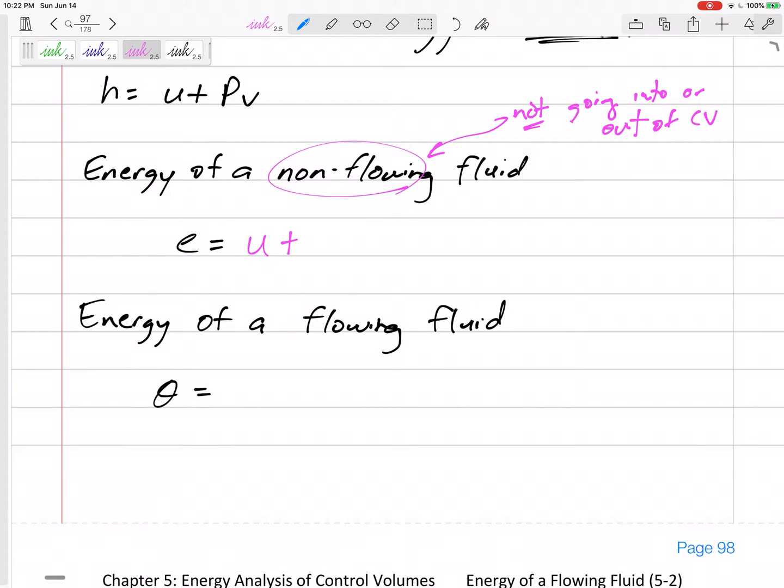But of course there's no v if it's not moving. But for inlets, the energy of a flowing fluid would be h plus v squared over 2 plus gz.